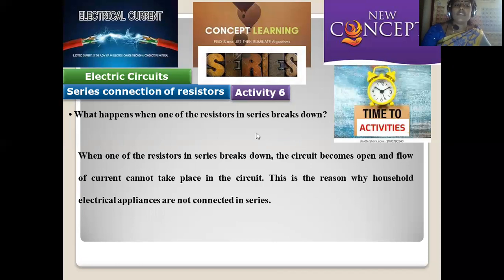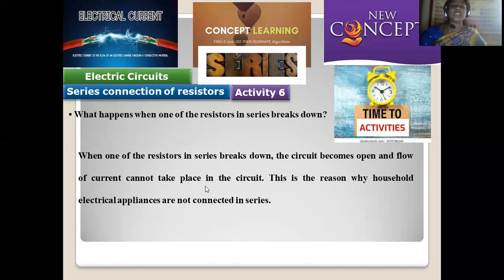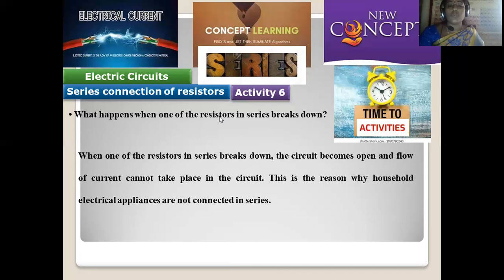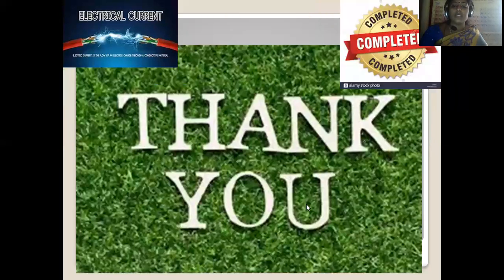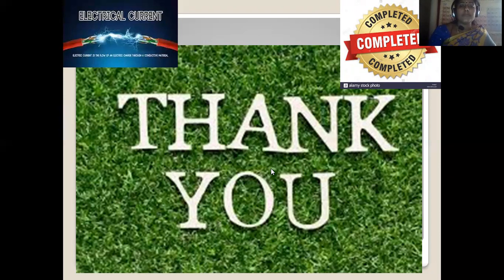What happens when one of the resistors in the series breaks down? When one of the resistors is not in working condition, the series circuit becomes open and the flow of current will not take place. In a series connection, continuity of flow is necessary — only then is the passage of current possible and the bulbs illuminate. If one resistor is not working, the circuit will be broken, current passage is not possible, and the entire system will not be illuminated because the circuit has opened or broken.